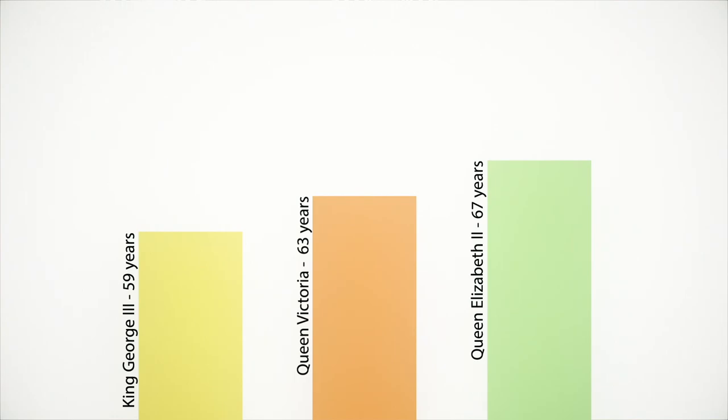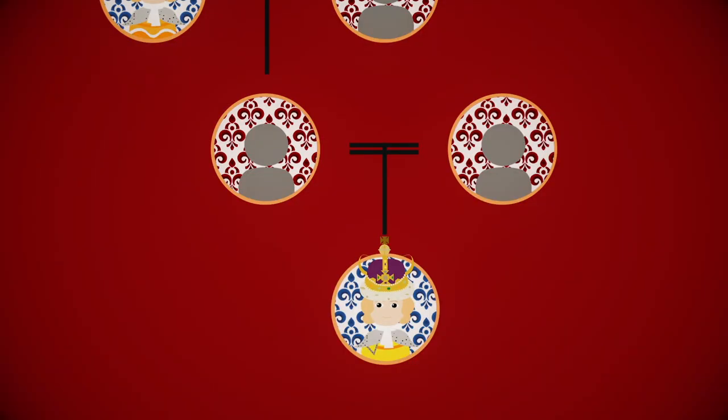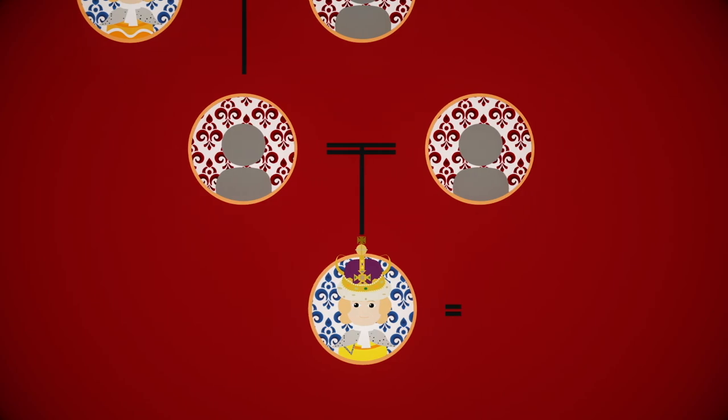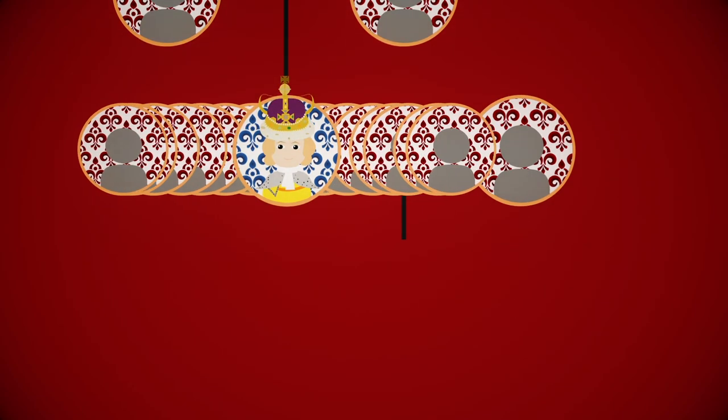George III is currently the third longest reigning monarch after Queen Victoria and Queen Elizabeth II. George III was one of ten children to Princess Augusta of Saxe-Gotha and Frederick, Prince of Wales. Shortly after becoming king, he met the daughter of a German duke, Charlotte of Mecklenburg-Strelitz. They got married and had 15 children.